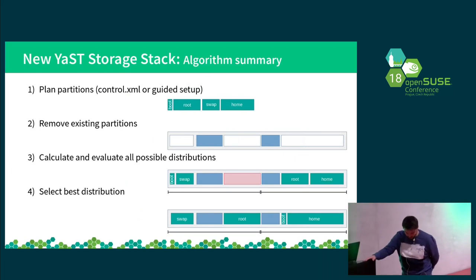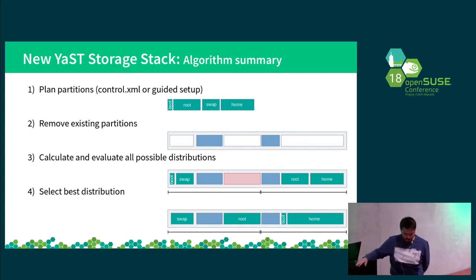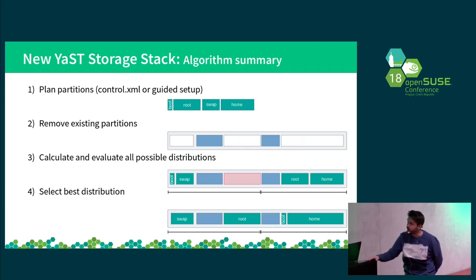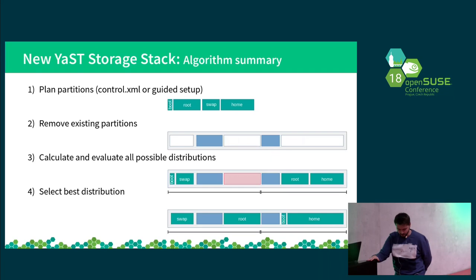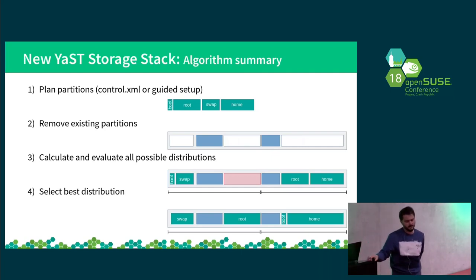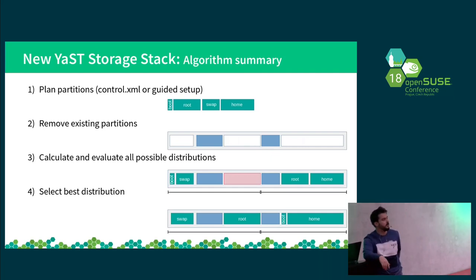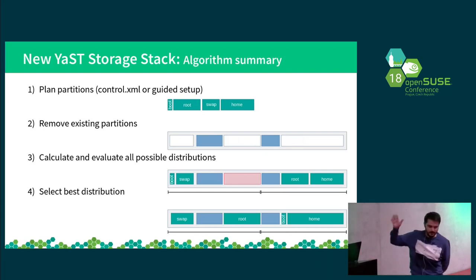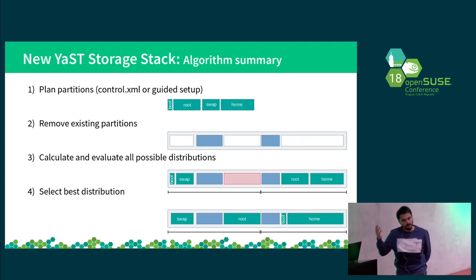This is the general algorithm to generate a new proposal: in the first step it plans a set of partitions based on the control file and user settings; then it removes partitions to make space; then it calculates and evaluates all possible distributions and selects the best one. This is a simplified view of the algorithm — the actual algorithm is more complex, for example when creating logical volumes with LVM selected, but this is enough to understand the general idea.